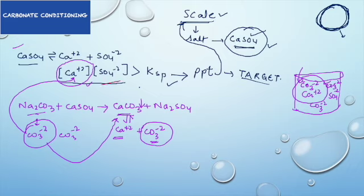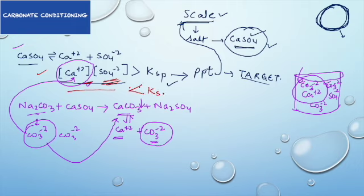As a result, the sulfate ions will not have a sufficient amount of calcium ions available. Due to the decreased concentration of calcium ions, the ionic product of sulfate and calcium will not exceed the solubility product, and hence no scale will be formed. This process is called carbonate conditioning.